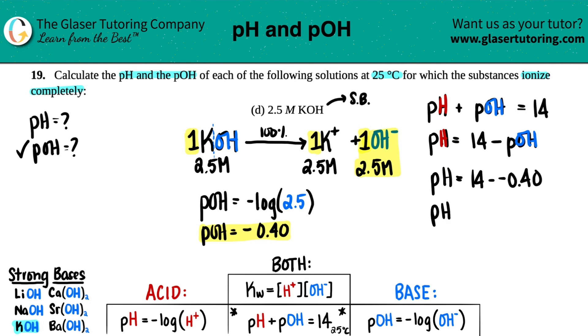So pH equals 14 minus a negative 0.40. So I get a pH of greater than 14. I mean, way basic. 14.40. And that is the end. We found out the pH, and we found out the pOH, and this question is done.